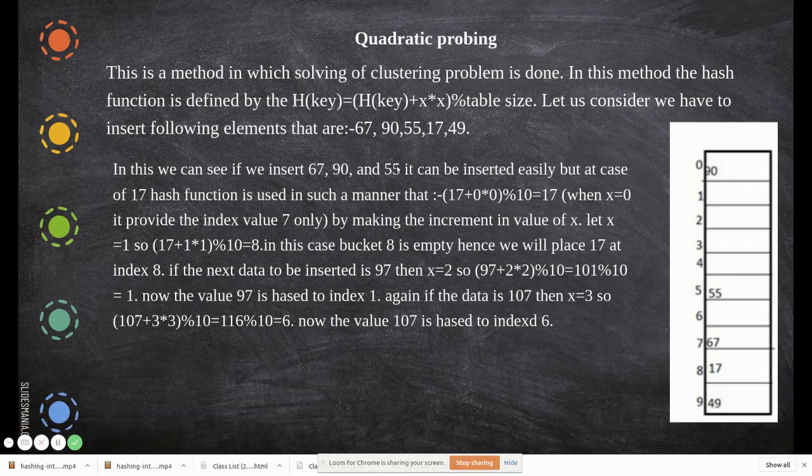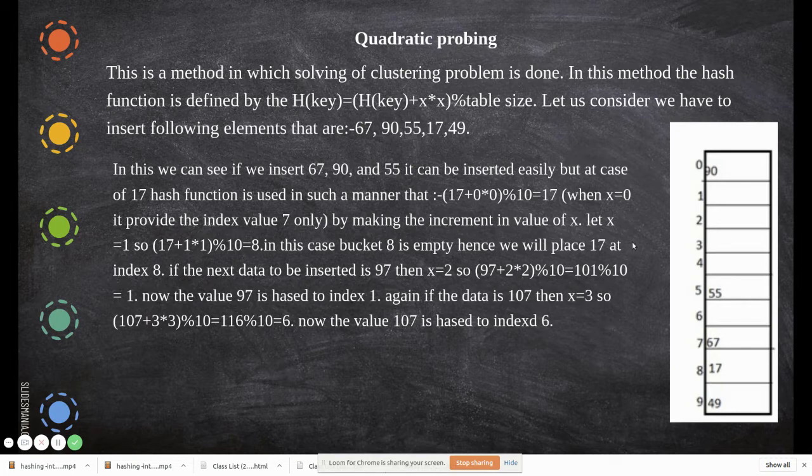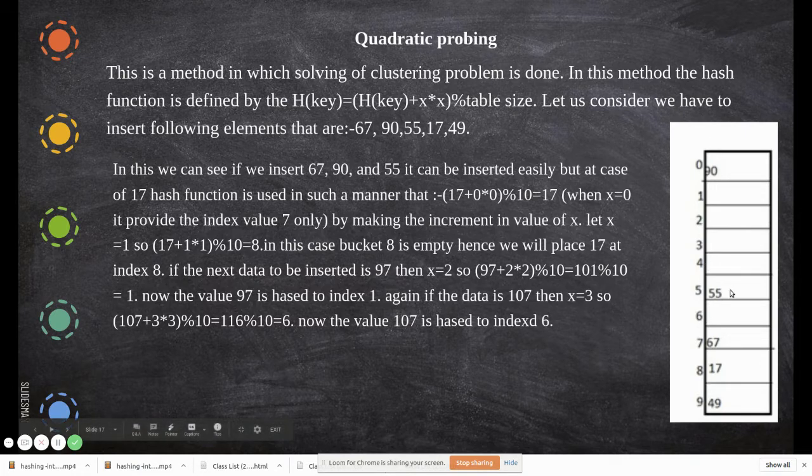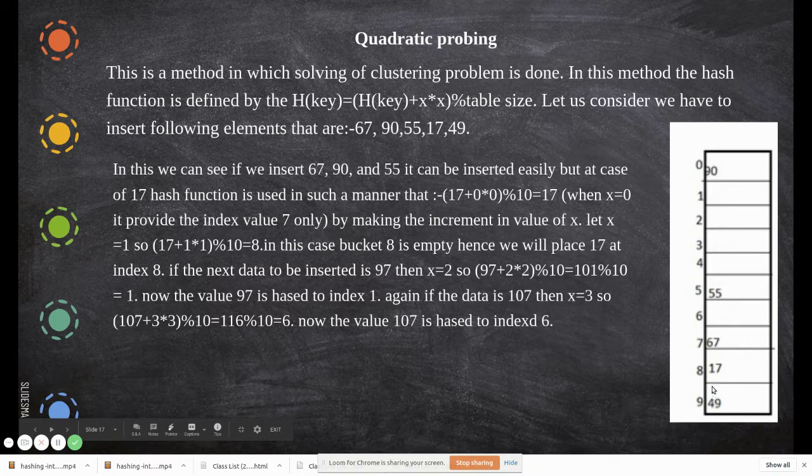Now we'll see how to apply this. These are the keys from which we'll generate the hash address and place them in the array. Consider the array consists of 0 to 9, so 10 is the total number of elements which can be stored in this array.